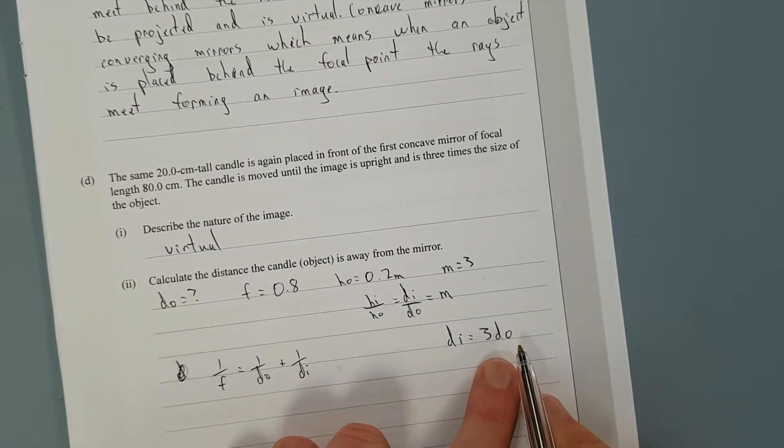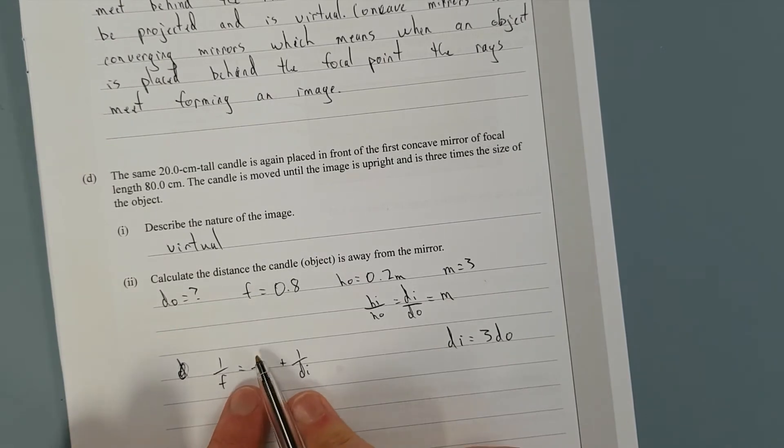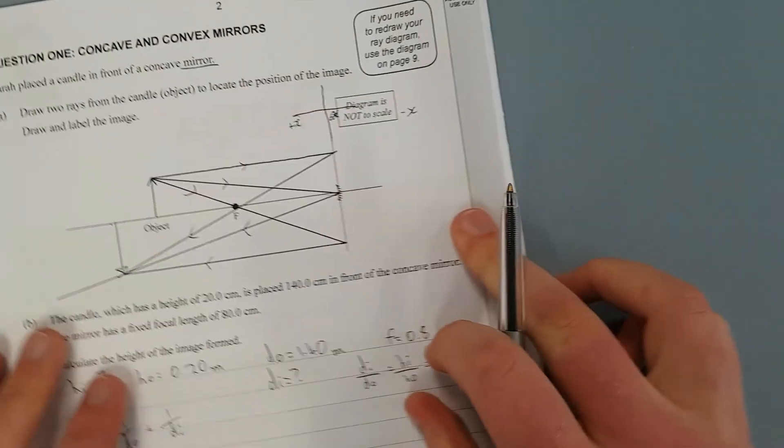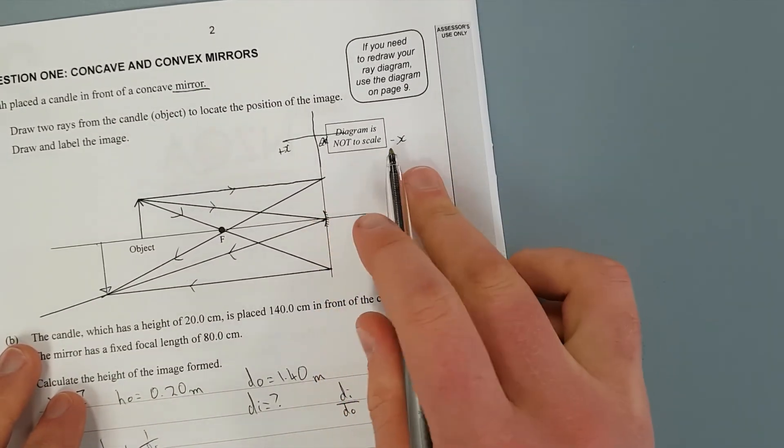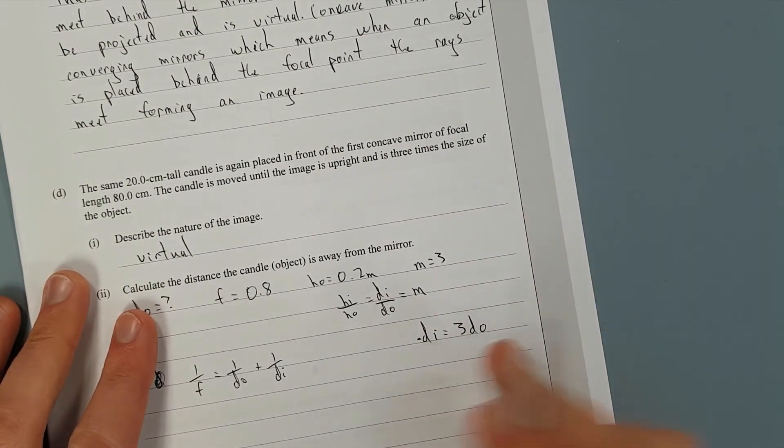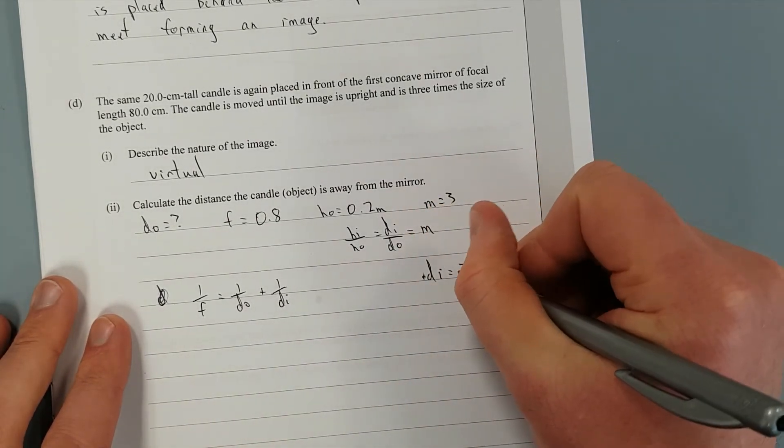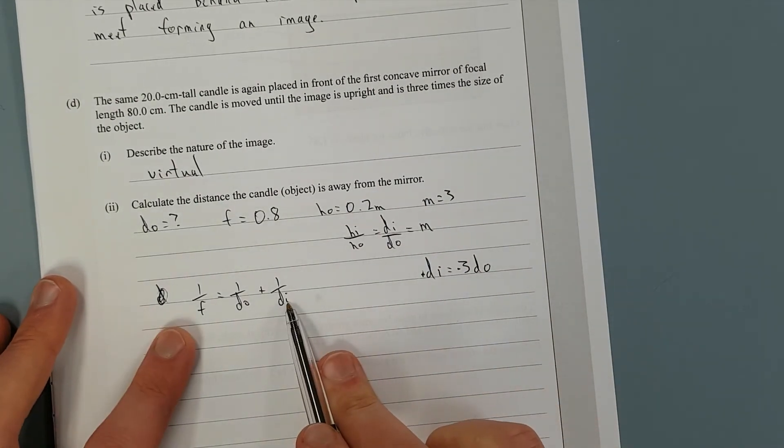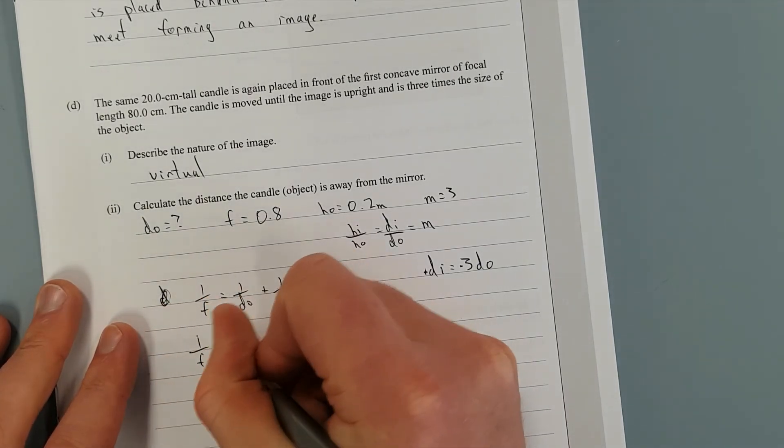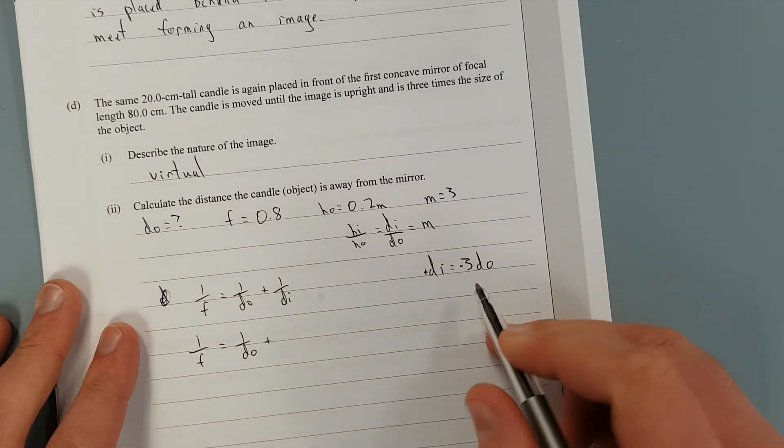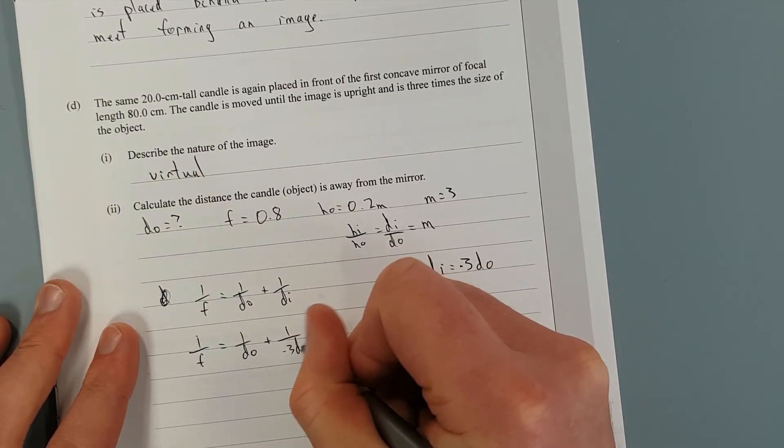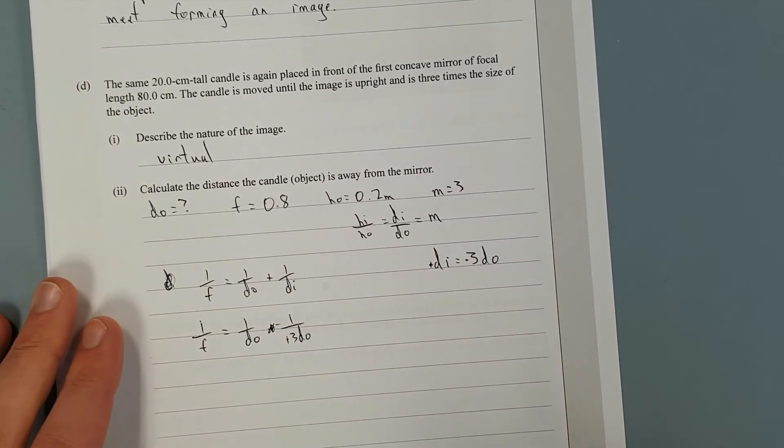So once we've got here, we could easily just substitute in three DO into here. We'd get one over DO plus one over three DO. We have a problem. Distance to the image, like I said before, is negative because we're now on the negative side of that inverted Cartesian coordinate system. So DI is negative because it's behind the mirror. So what we should do is, DI here is positive, so we'll times both sides by negative one. So I'll make that positive and make that negative.